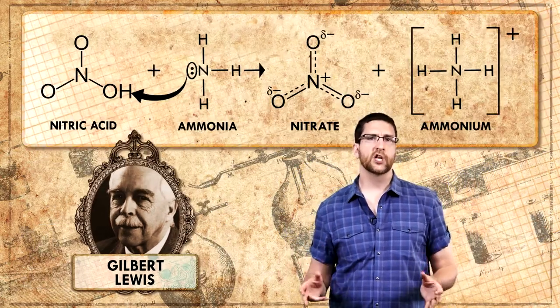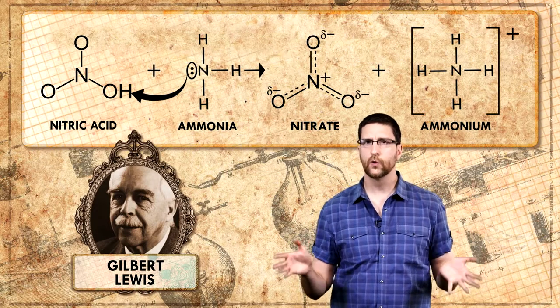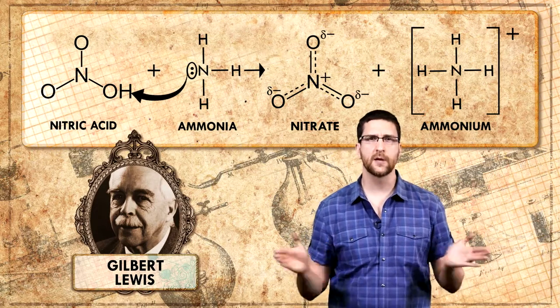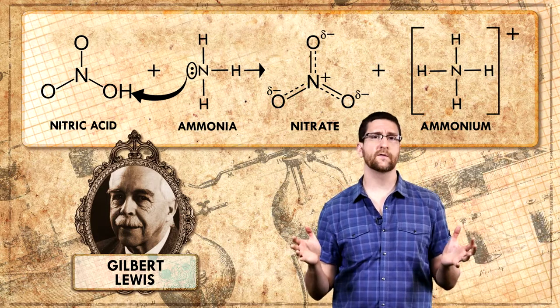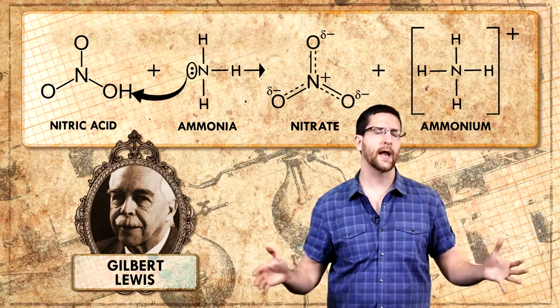The very same year, American chemist Gilbert Lewis came up with yet another, but even more general definition of acids and bases. To Lewis, an acid is an electron acceptor. Remember, electrons are the negatively charged particles that make up bonds between atoms. And a Lewis base is an electron donor. Lewis' definition has nothing to do with protons, which means the terms acid and base can be applied to reactions that don't involve hydrogen. This expands the definition to accommodate even more chemical reactions.